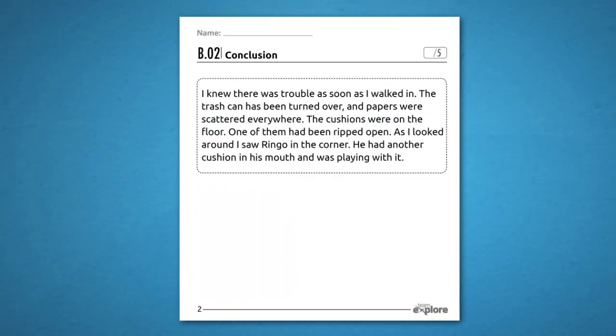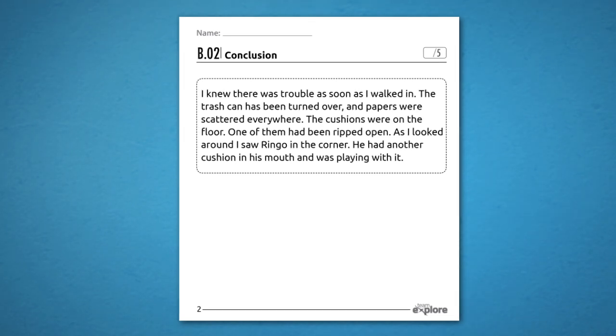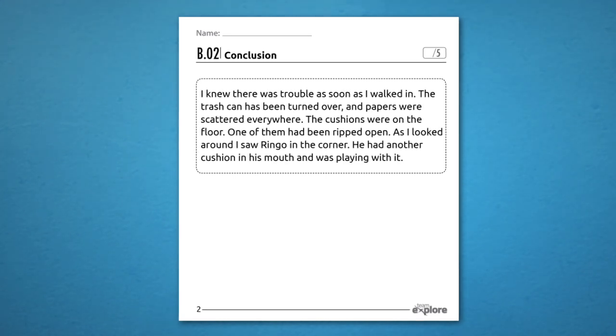Let's try one more. I knew there was trouble as soon as I walked in. The trash can had been turned over and the papers were scattered everywhere. The cushions were on the floor. One of them had been ripped open. As I looked around, I saw Ringo in the corner. He had another cushion in his mouth and was playing with it.